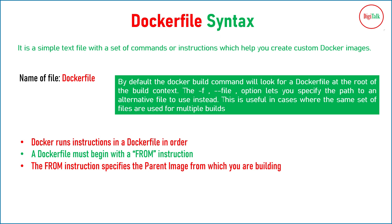Moving to Dockerfile syntax — it is a simple text file where you need to learn certain basic commands. By default, the docker build command will look for a file named 'Dockerfile' (with capital D) at the root of the build context. When running the build command you put a dot at the end, meaning look for the Dockerfile in the current directory. You can override this default filename using the -f or --file option to specify any filename.